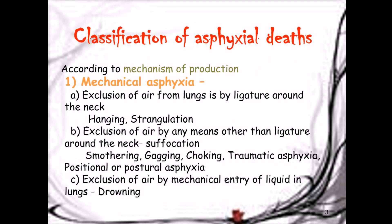The classification of asphyxial deaths is according to the mechanism by which these deaths are produced. First is mechanical asphyxia, in which exclusion of air from the lung is by a ligature around the neck — as in hanging and strangulation. Second is exclusion of air by any means other than a ligature around the neck, like suffocation — examples include smothering, gagging, and choking.